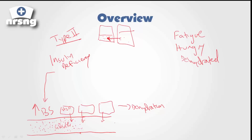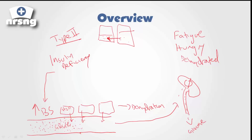As this blood continues to flow, it eventually gets to the kidneys. As the blood passes into the kidneys, with HHNS there's so much glucose in the blood that the kidneys are not able to filter it. Where normally the kidneys would draw that glucose out and get it back into the bloodstream, because we have so much glucose, the kidneys cannot filter it and all that glucose ends up being lost in the urine. The water follows that glucose, so we end up losing a tremendous amount of water as well.